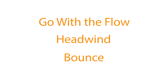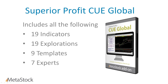Additional trade setups may be identified by combining the powerful 19 indicators included within the Q Global system. The Q Global system is very easy to use. It has 19 indicators and seven expert advisors, and they're consistently color-coded to make trading analysis intuitive and easy to use at a glance.